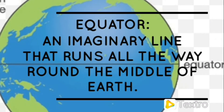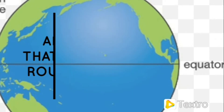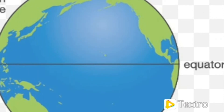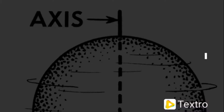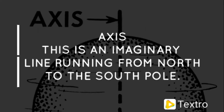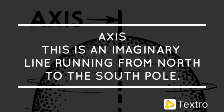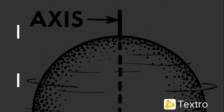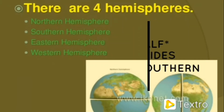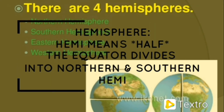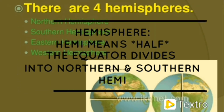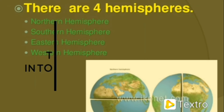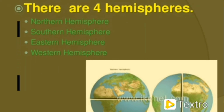The axis is an imaginary line running from north to south pole. There are four hemispheres — 'hemi' means half. The equator divides the earth into the northern and southern hemisphere.